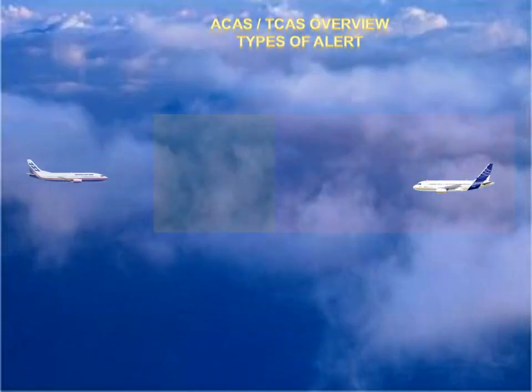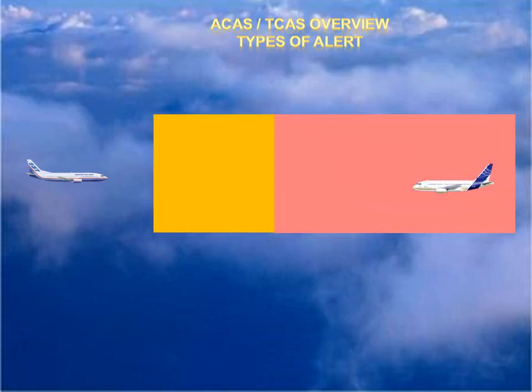Types of alert. Traffic advisories aim to help the pilot in the visual search for the intruder aircraft, and by alerting him to be ready for a potential resolution advisory. Resolution advisories are avoidance maneuvers recommended to the pilot in the vertical sense, typically restricted to a range of vertical speed of 500 feet per minute. This is to prevent aircraft deviating too far from their cleared levels and producing further conflicts.